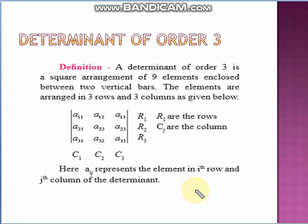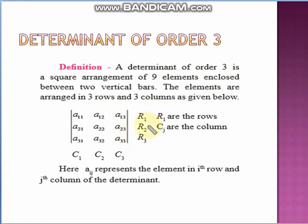Now let us learn a new concept: the determinant of order 3. A determinant of order 3 is a square arrangement of 9 elements enclosed between 2 vertical bars. The elements are arranged in 3 rows and 3 columns, denoted by R1, R2, R3 for rows and C1, C2, C3 for columns.